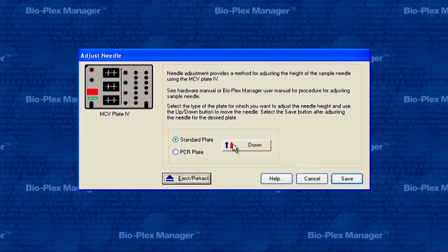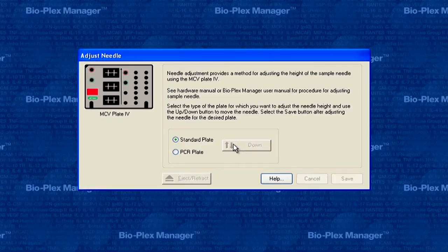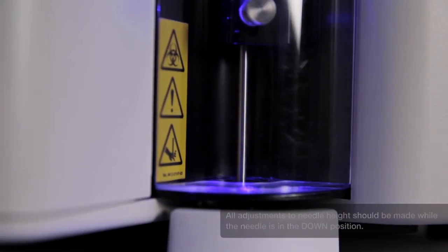Now, click on the up-down button in the Adjust Needle dialog box. The needle will move to the down position.